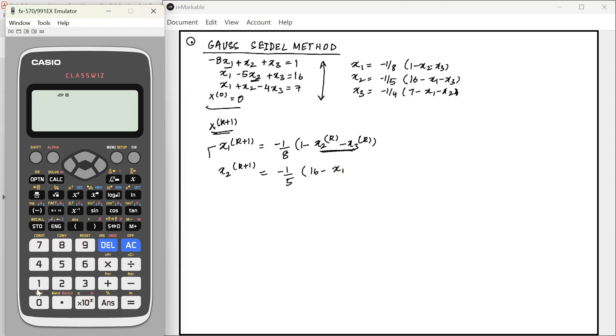Here we use the value of x1 k+1 which we have found here, not from the previous iteration. This is the previous value because we have not calculated x3 for this iteration. x3 k+1 equals minus 1 by 4 times 7 minus x1 k+1 which we have calculated here and x2 k+1 which we have calculated here.